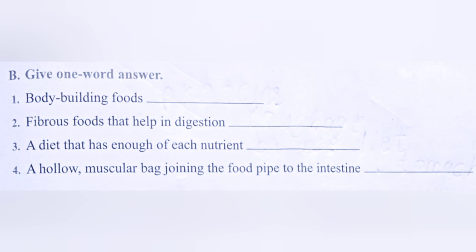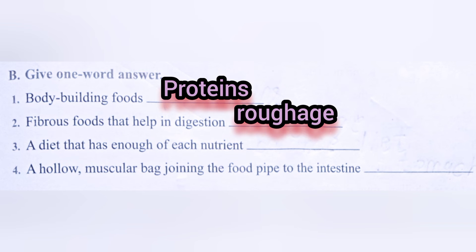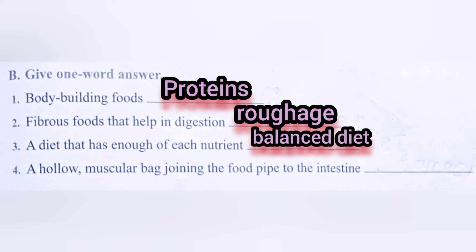Part B: Give one word answers. First one — body building foods are called proteins. Second one — fibrous foods that help in digestion are called roughage. Third one — a diet that has enough of each nutrient is called a balanced diet. Fourth one — a hollow muscular bag joining the food pipe to the intestine is called the stomach.